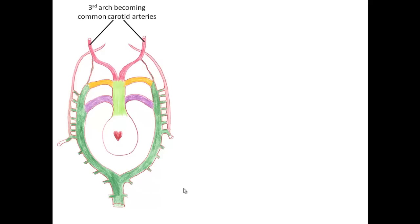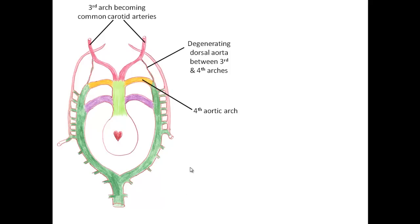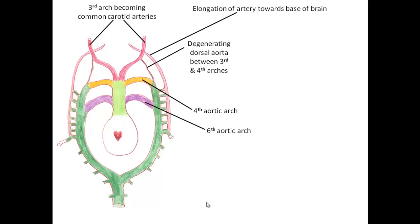Moving along, the first and second aortic arches are gone. We have the third and fourth, and no fifth arch — instead, the sixth will form. Between the third and fourth arch, the dorsal aorta begins to degenerate, detaching these two vessels from each other. The sixth arch remains attached to the dorsal aorta and is closely bridged with the fourth arch. The elongating artery keeps growing toward the base of the brain, while the seventh intersegmental starts to grow outward, supplying the forelimb bud.